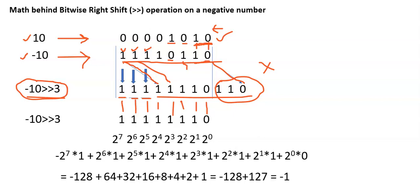Then we find out the decimal value of this binary number. As discussed in previous videos, we assign powers of 2 starting from 2 power 0 up to 2 power 7. Since this is a signed number, the most significant bit carries a negative sign: minus 2 power 7 into 1, plus 2 power 6 into 1, and so on, down to 2 power 0 into 0. This gives minus 128 plus 64 plus 32 plus 16 plus 1, which totals plus 127. So minus 128 plus 127 gives a final answer of minus 1.